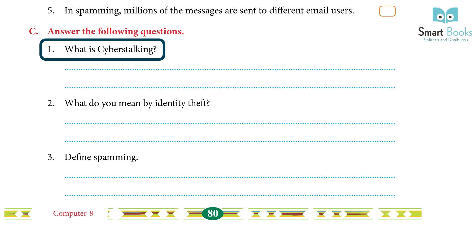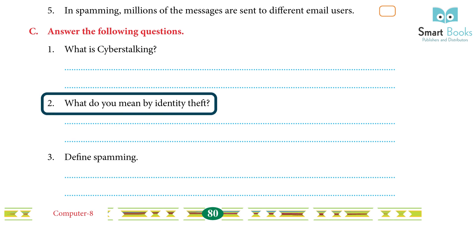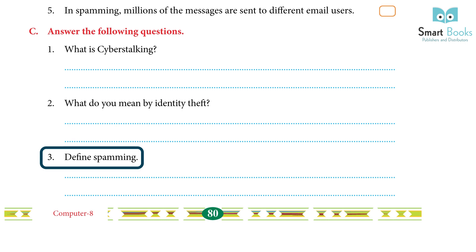Answer the following questions: 1. What is cyber stalking? — Cyber stalking is the recurrent practice of unwanted monitoring or harassment with the intent to manipulate or influence the victim; online and offline stalking are both against the law. 2. What do you mean by identity theft? — Identity theft is a type of cyber crime in which the culprit creates a false identity to obtain financial benefits like credit cards and loans. 3. Define spamming — Spamming involves sending the same messages to email users all over the world in millions; since spam may be used to spread malware such as Trojan horses, viruses, worms, spyware, and coordinated phishing attempts, it poses a major security risk.